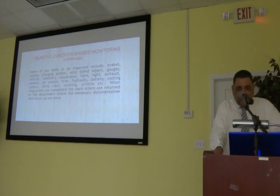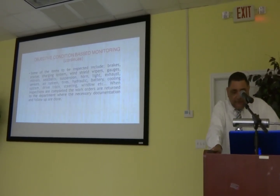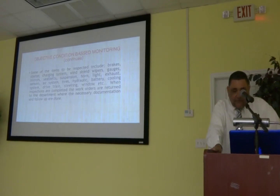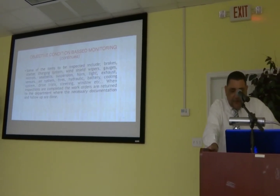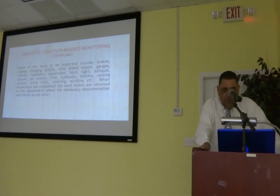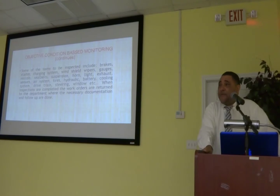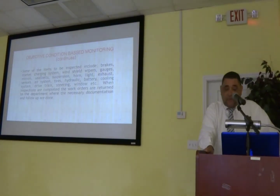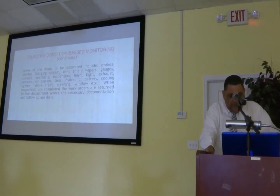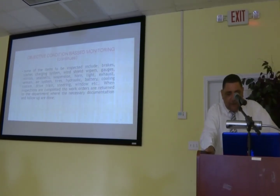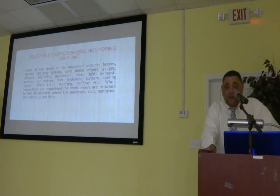Some of the items to be inspected include brakes, starter, charging system, windshield wipers, gauges, mirrors, seat belts, suspension, horn, lights, exhaust sensors, air system, tires, hydraulic battery, cooling system, drivetrain, steering, windows, etc. When inspections are completed, the work orders are returned to the transport department where the necessary documentation and follow-up are done.